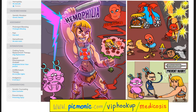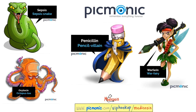Treatment for hemophilia includes clotting factor replacement therapy. Desmopressin can help, especially with hemophilia A, because desmopressin promotes von Willebrand factor expression, which helps factor VIII. Antifibrinolytic therapy can be used. Analgesics for pain. Genetic counseling is important. Prevent injury, because even a skin scratch can lead to severe bleeding. Check out Picmonic at picmonic.com for hundreds of medical mnemonics.